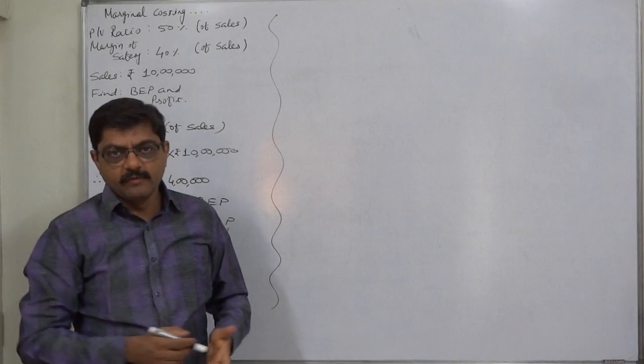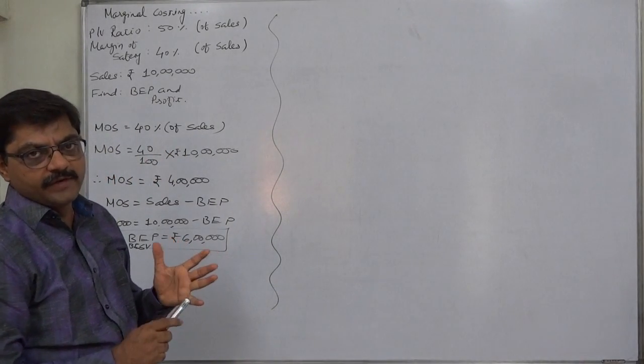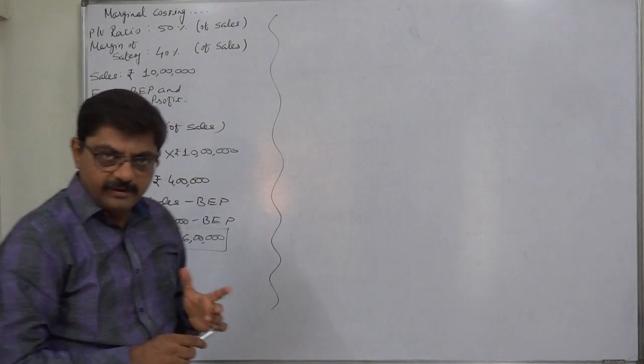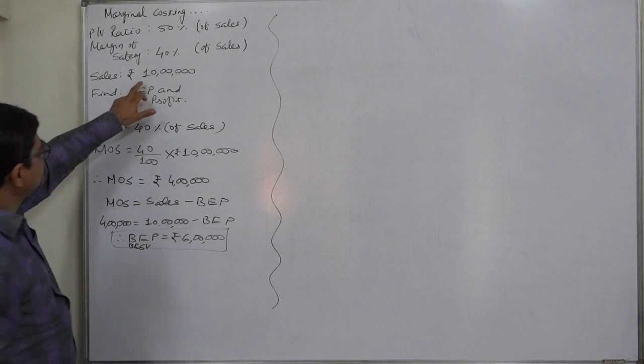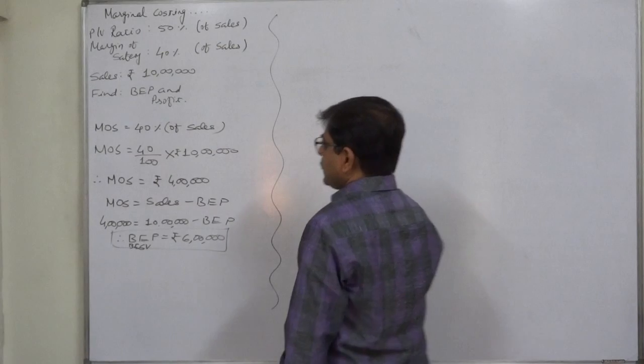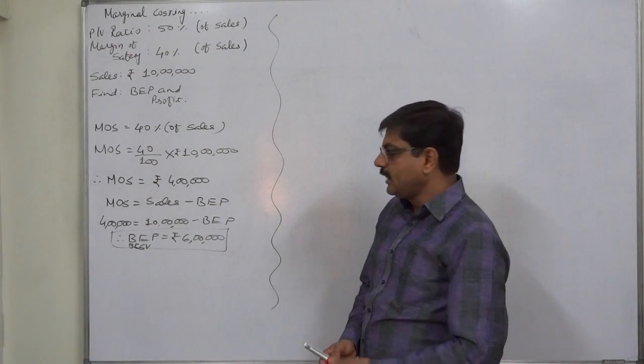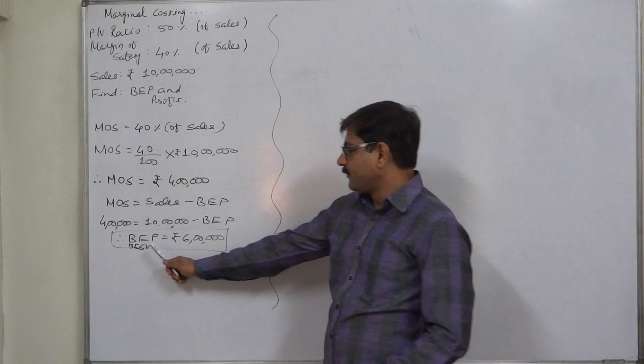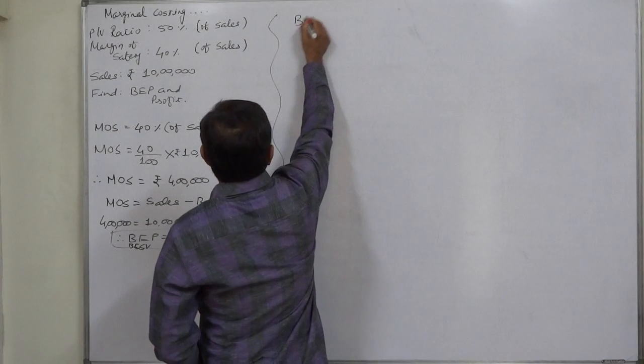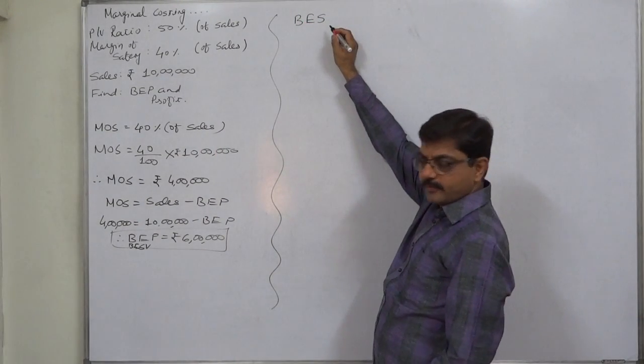Remember the formula of sales or required sales. It has four components: sales equals to fixed cost plus profit upon contribution if we have quantity, upon PV ratio if we have value. Since we have sales value, we have to substitute PV ratio. But there are two missing items, fixed cost as well as profit. So first of all, we need to find out fixed cost and the formula of break-even sales value will give us the amount of fixed cost.